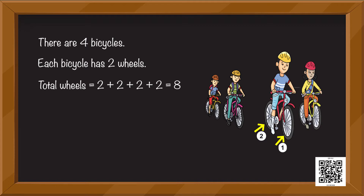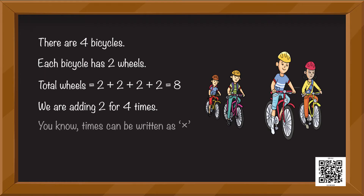So total wheels is equal to two plus two plus two plus two, which is equal to eight. We are adding two four times. An interesting thing to know: times can be written as multiply, which looks like a cross to us. So four multiplied by two is equal to eight. Or we can also say four into two is equal to eight.